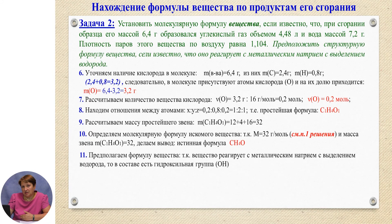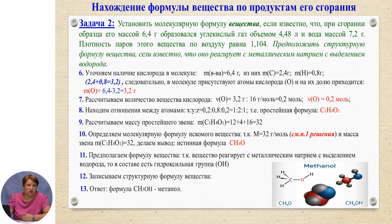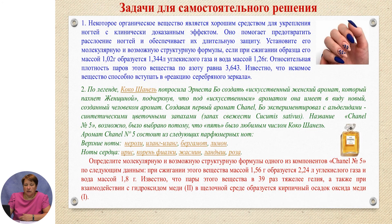We now complete the problem by proposing a structural formula based on chemical activity. Since the substance reacts with metallic sodium releasing hydrogen, we conclude that a hydroxyl group (–OH) is present. Extracting the hydroxyl group from CH₄O gives us CH₃OH — that is, methanol, or methyl alcohol.